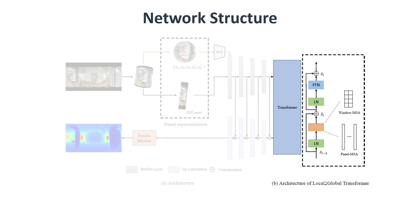Based on the panel representation, we design a local-to-global transformer as the feature processor. There are two different kinds of transformer blocks in the local-to-global transformer: window blocks and panel blocks. The window blocks are used to enhance the local modeling ability within a panel. The panel blocks are used to capture the long-term dependencies across the panels. To capture the features from local to global, we stack up the transformer blocks from window blocks to panel blocks.